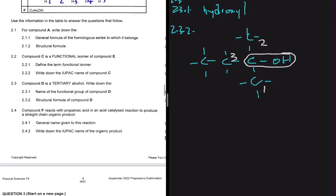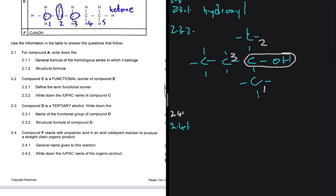And moving to 2.4. So 2.4 is that compound F reacts with propanoic acid in an acid catalyst reaction to produce a straight chain organic product. Let's give a general name given to this reaction. Compound F, let's look at compound F. Compound F is an alcohol. And then if it reacts with propanoic acid, then esterification is going to take place. Alcohol plus an acid. So 2.4.1, we have esterification as our answer there.